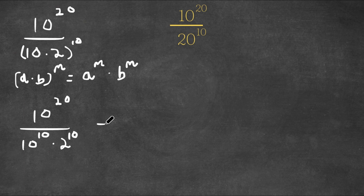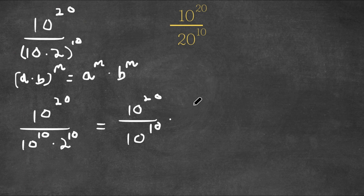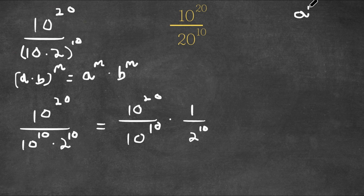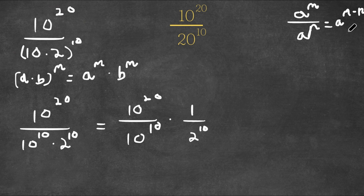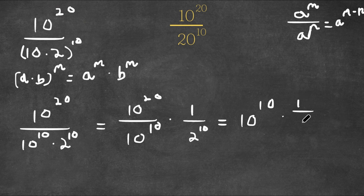Now this is the same thing as 10 to the power of 20 over 10 to the power of 10, times 1 over 2 to the power of 10. Now for 10 to the power of 20 over 10 to the power of 10 — if we have a to the power of m over a to the power of n, this equals a to the power of m minus n. So you simply keep the base the same and subtract the exponents. So this equals 10 to the power of 20 minus 10, which is 10 to the power of 10, times 1 over 2 to the power of 10.